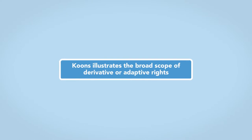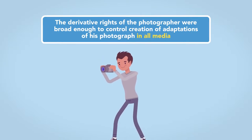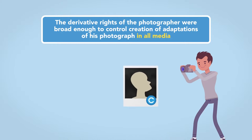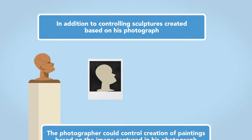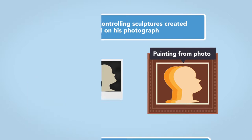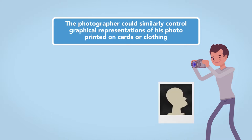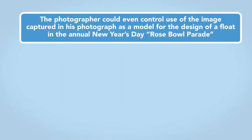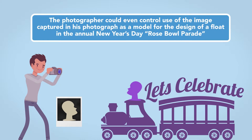Coons illustrates the broad scope of derivative or adaptive rights. The derivative rights of the photographer were broad enough to control creation of adaptations of his photograph in all media. Thus, in addition to controlling sculptures created based on his photograph, the photographer could control creation of paintings based on the image captured in his photograph. The photographer could similarly control graphical representations of his photo printed on cards or clothing, and could even control use of the image as a model for the design of a float in the annual New Year's Day Rose Bowl parade.